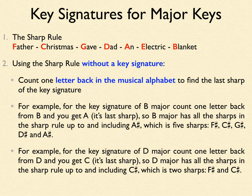For E major, count one letter back from E and you get D. So E major has all the sharps up to and including D sharp: F sharp, C sharp, G sharp, and D sharp. For C sharp major, count one letter back from C and you get B. So C sharp major has all the sharps up to and including B sharp — every sharp in the rule: F sharp, C sharp, G sharp, D sharp, A sharp, E sharp, and B sharp. That's how you use the sharp rule when you don't have a key signature.